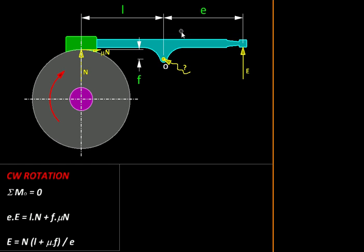Here they are. All distances are measured from O. The distance of effort is E, distance of load or normal reaction is L, and the distance of friction is F. So this is the equation we are starting with. Sum of moments about O is zero, and that is going to give us this.